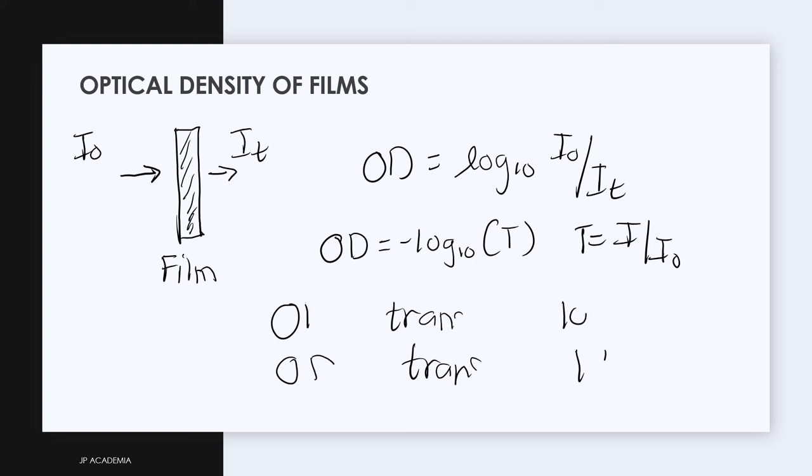The transmittance T is just the fraction of the visible light passing through the film from the light source. Now OD, if your OD is equal to 1, it transmits 10%, and if your OD is equal to 2, it transmits 1% of the initial intensity.